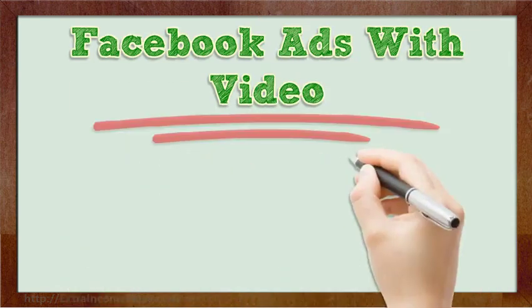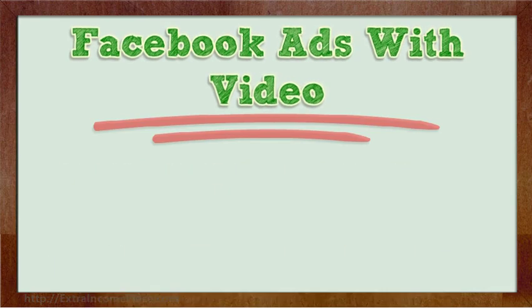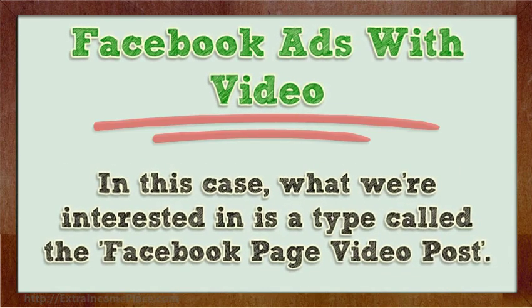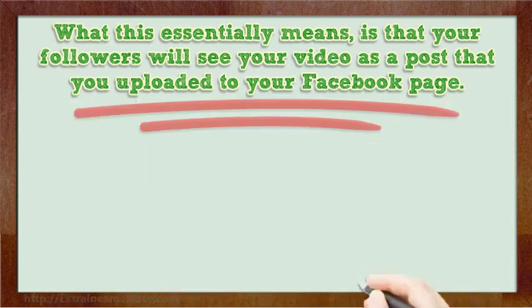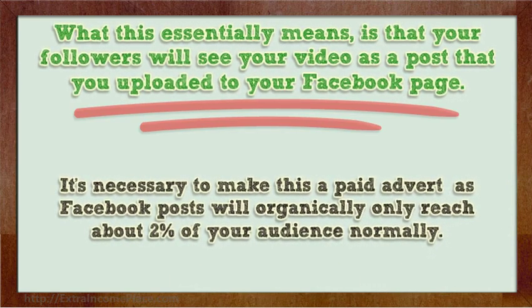Facebook allows you to create a number of different types of advert, each with different features. What we're interested in is a type called the Facebook Page Video Post. What this essentially means is that your followers will see your video as a post that you uploaded to your Facebook page. It's necessary to make this a paid advert, as Facebook posts will organically only reach about 2% of your audience normally.